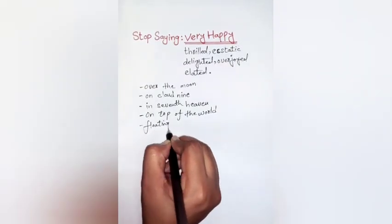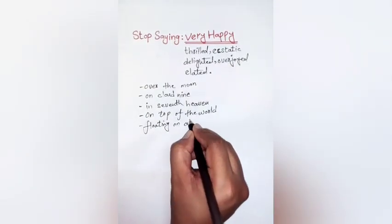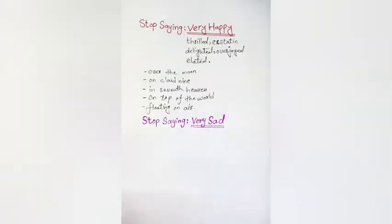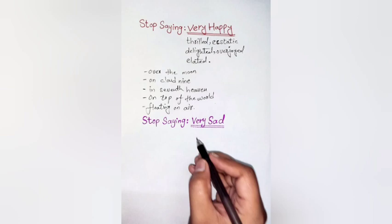Let's take a look at some examples. Sarah was thrilled to start her new job. He was over the moon about going on vacation. John was delighted with his new house.